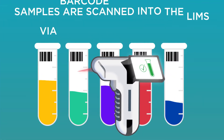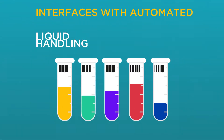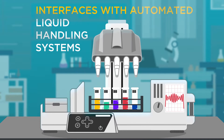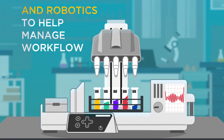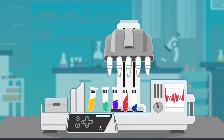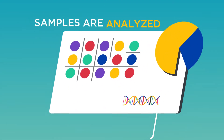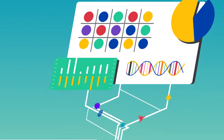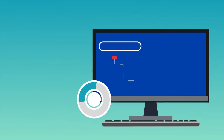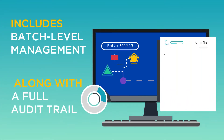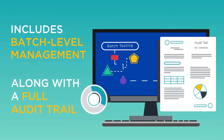Barcodes on testing samples are scanned into the LIMS to access the corresponding test order. The molecular LIMS interfaces with liquid handling systems and robotics to automate workflow by tracking sample placement throughout the testing process. As molecular testing is performed, the results are tracked and documented in the LIMS.